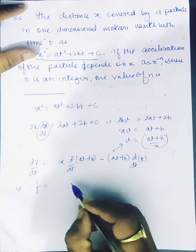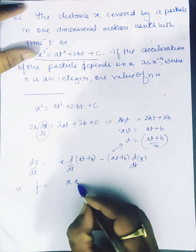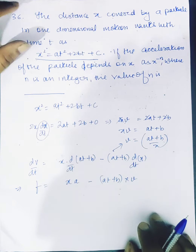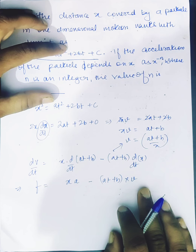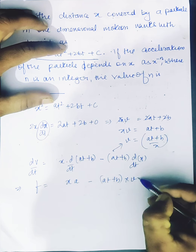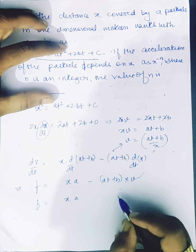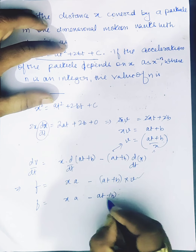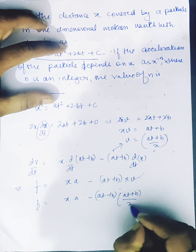This gives the acceleration. The derivative of (at plus b) is a, and d/dt(x) is v. So acceleration f equals x·a minus (at plus b)·v, divided by x squared. Substituting v equals (at plus b)/x, the term (at plus b)·v becomes (at plus b) squared divided by x.